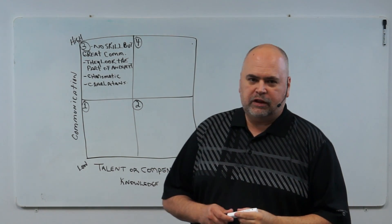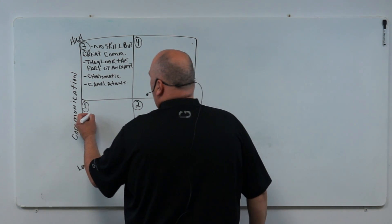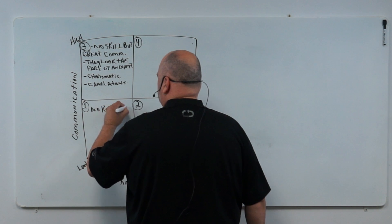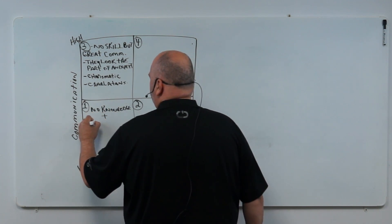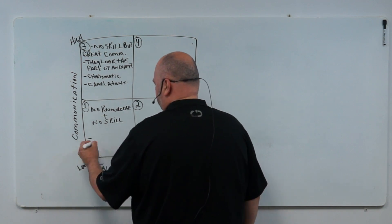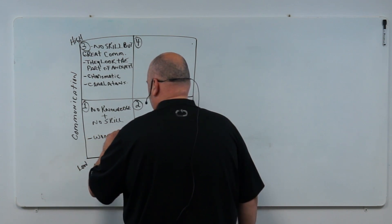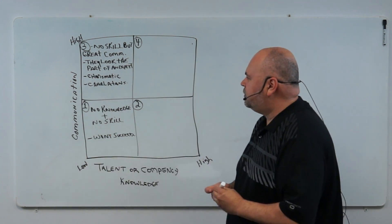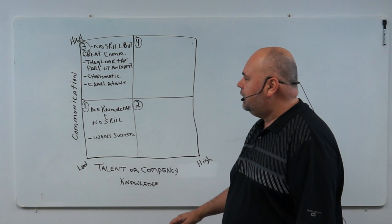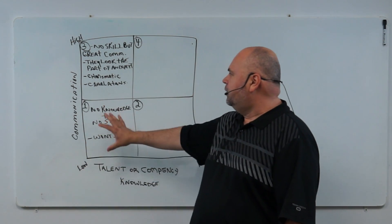Let me go through each box. Box number one: they have no knowledge and no skill. These people are not going to be successful. In order to succeed in anything they do, they've got a lot of work to do — a lot of learning, both in knowledge and in communication. So they have no communication skills and no knowledge, and they're not going to succeed.